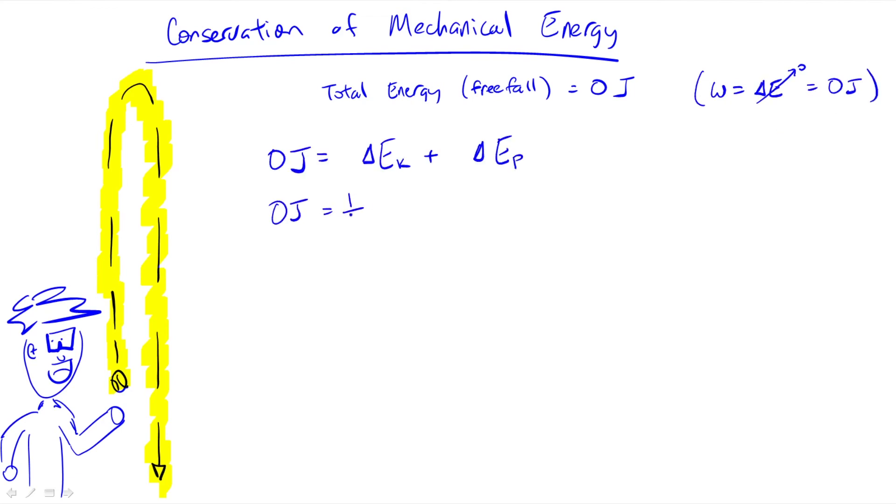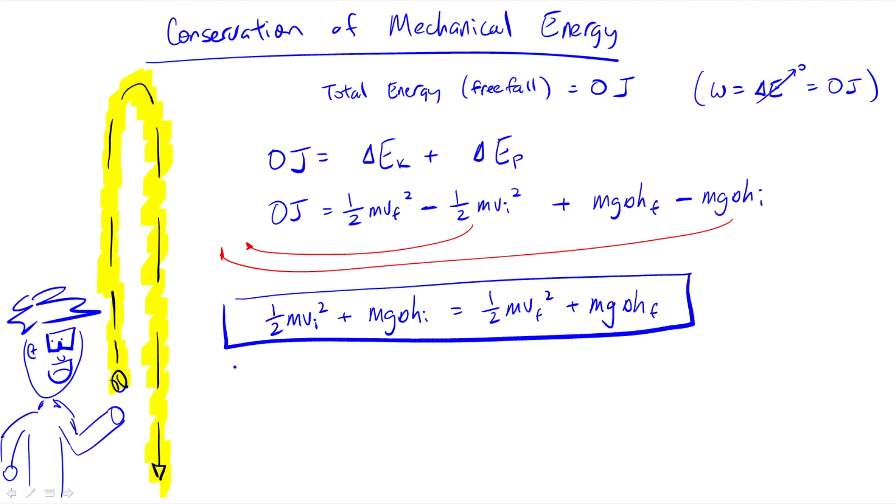If we expand out the formula and define I for initial, F for final, then we move all the initial values to the left, we get this generic statement. Which effectively states that the total energy at the beginning of free fall is equal to the total energy at the end.